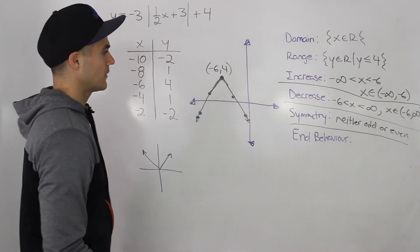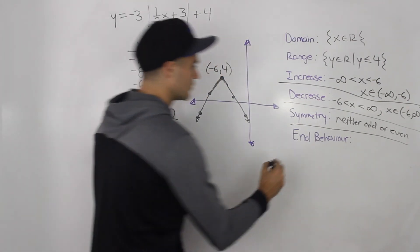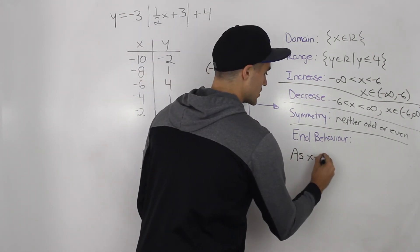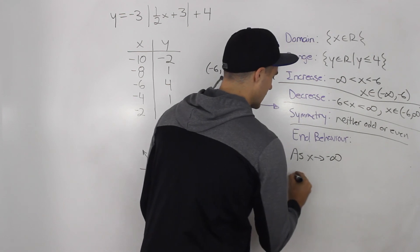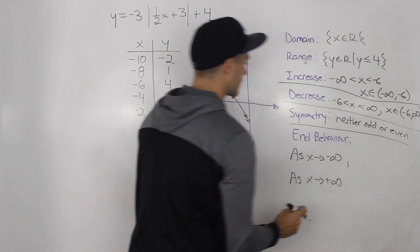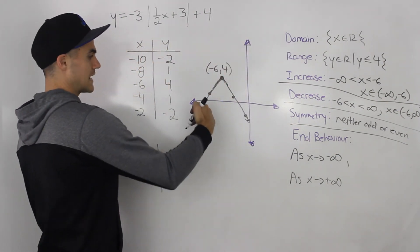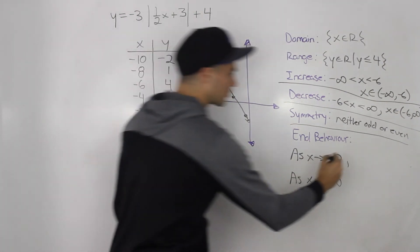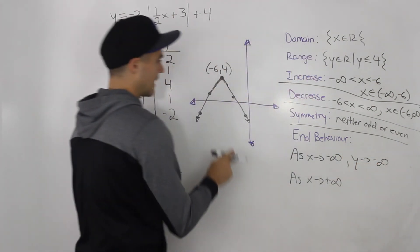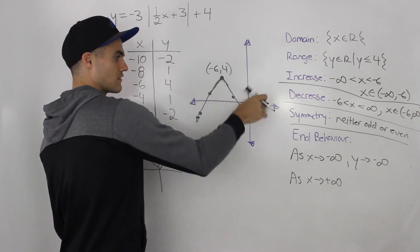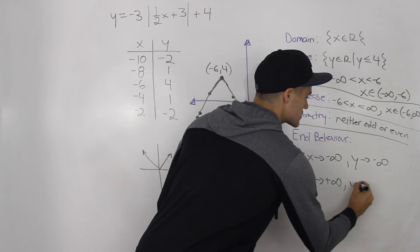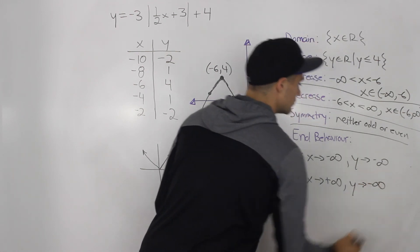Finally, the end behavior: as x approaches negative infinity, the y values approach negative infinity. And as x approaches positive infinity, the y values also approach negative infinity. Those are the two end behaviors for this function.